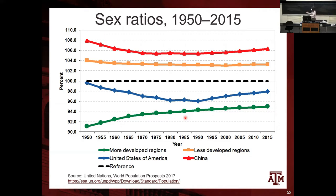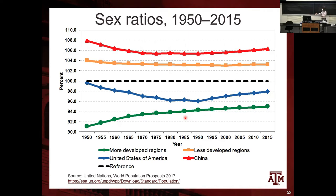Less developed regions have really high sex ratios due to a high preference for boys. In less developed regions and in China, for cultural reasons there is more preference for baby boys, and when some women see they are pregnant with daughters they may perform an abortion. There is also more gender inequality, so women have fewer resources and opportunities from childhood, which affects their mortality advantage. Overall, the number of men in those societies is higher than the number of women.